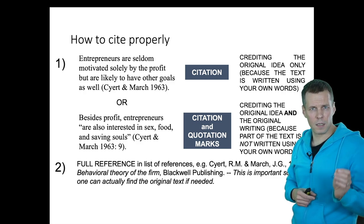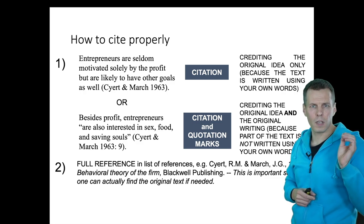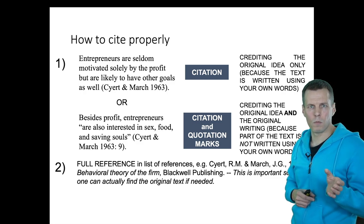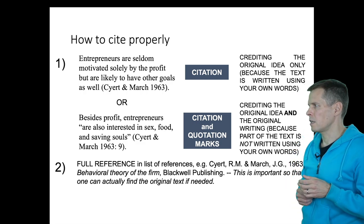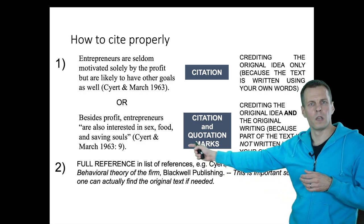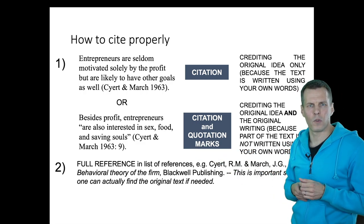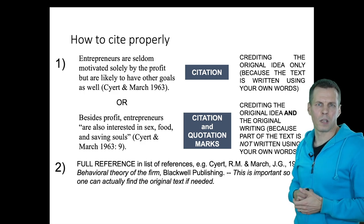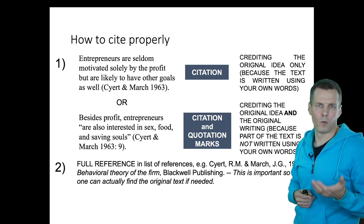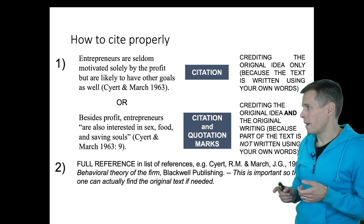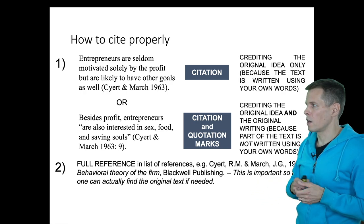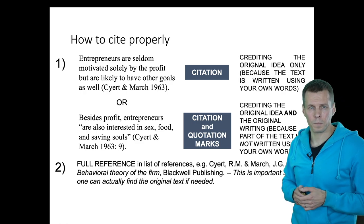If you take text directly, then you enclose that text in quotation marks, you include the citation, and importantly you include the page number. The page number is there so that someone who reads your writing can check if the quote is accurate and actually present in the paper. And then at the end you have the full reference in the reference list.